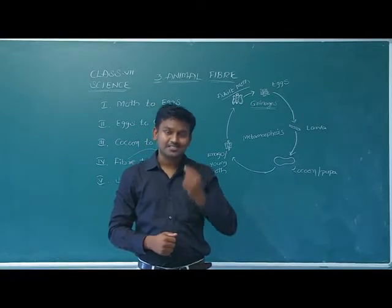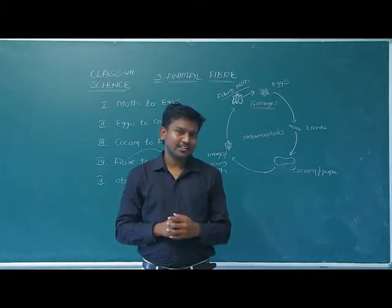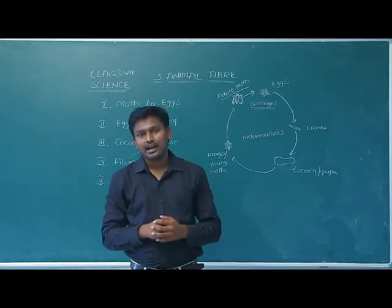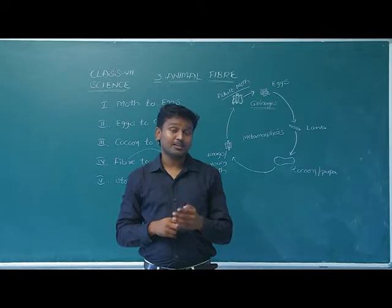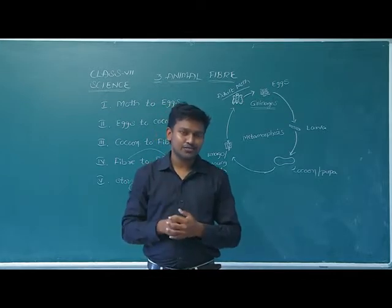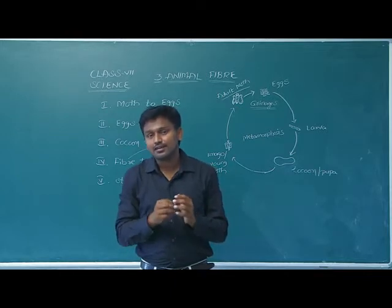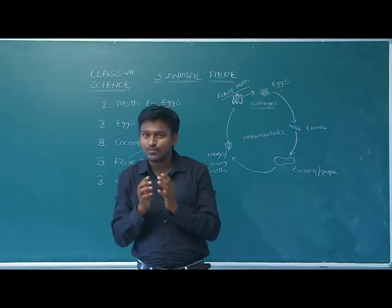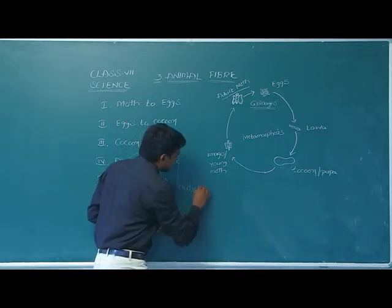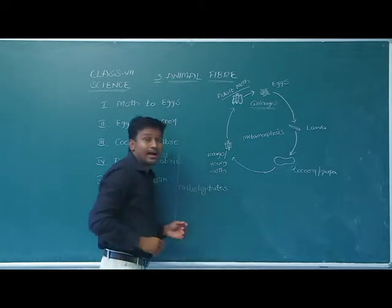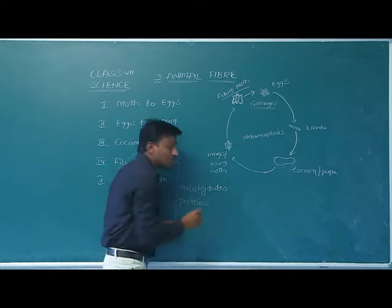Hello students, welcome to the online class. In sixth class we learnt about fibers — that fibers can be obtained from plants. In seventh class, third lesson, we are going to learn how fibers can be obtained from animals. Some examples of plant fibers are cotton, jute, and deccan hemp. Plant fibers have carbohydrates in them, and animal fibers have proteins in them.